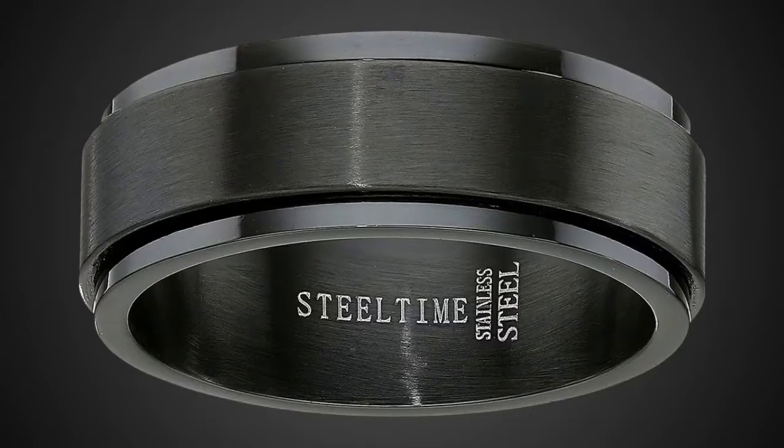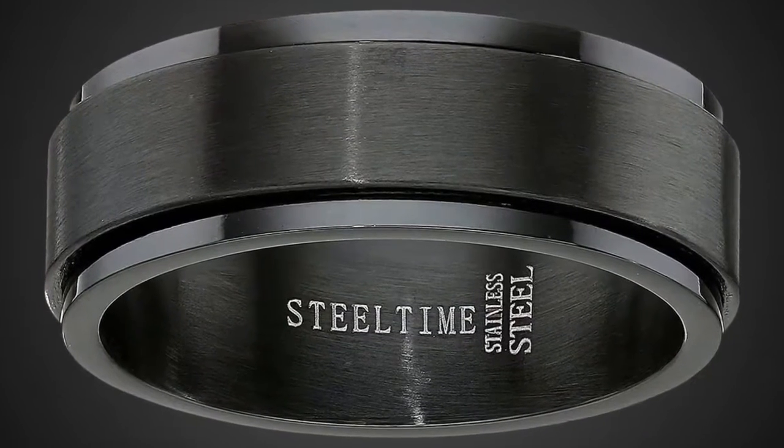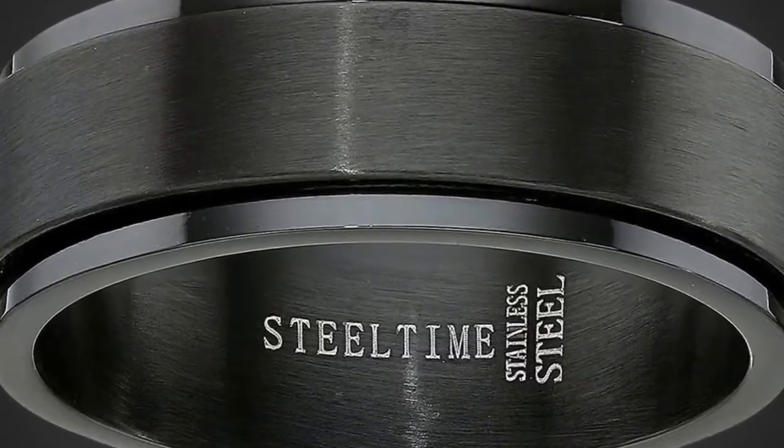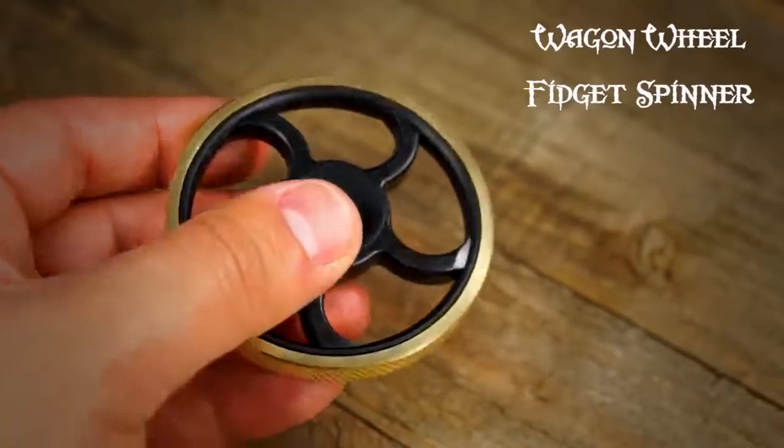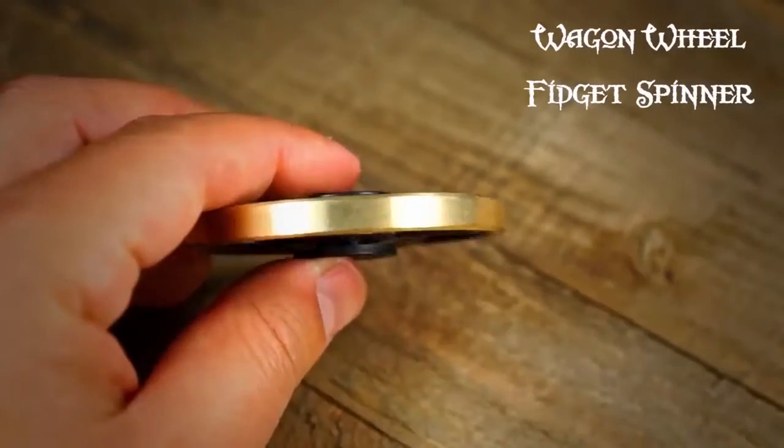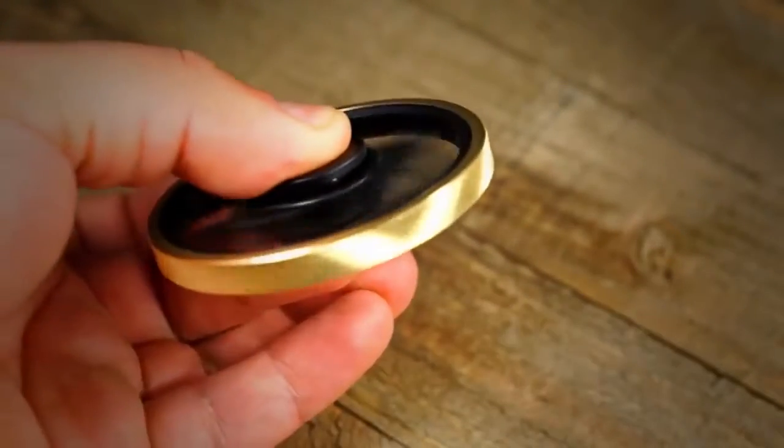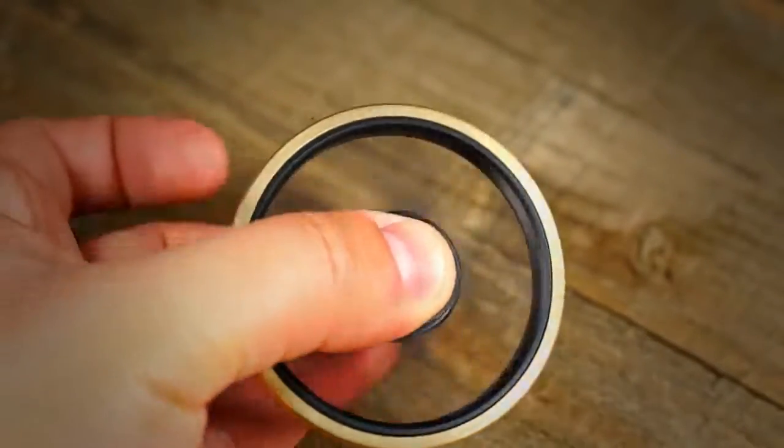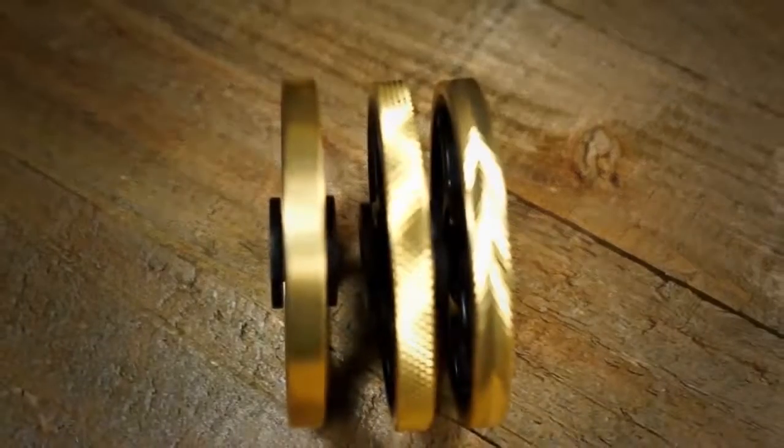Stainless Steel Black Spinner Ring. A more subtle way for dudes to herd the ants out of their pants, this black-on-black stainless steel band has a slightly protruding inner ring that rotates around the thicker section covering your finger. Comes only in full sizes, 9 to 12.